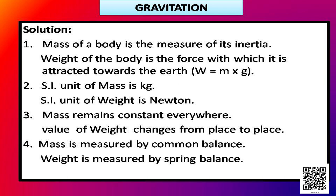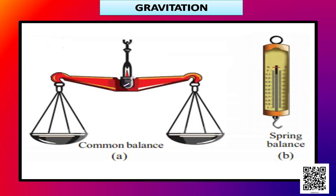Third point: mass remains constant everywhere. But in case of weight, its value changes from place to place because the gravitational force is not constant everywhere. The more we go away from the earth's surface, the gravitational force keeps on decreasing. Fourth point: mass is measured by a common balance, which you might have seen in vegetable markets, whereas weight is measured by a spring balance.